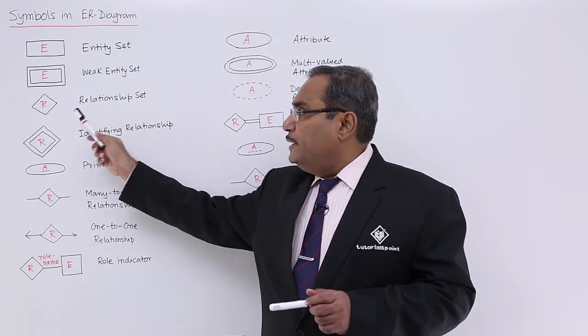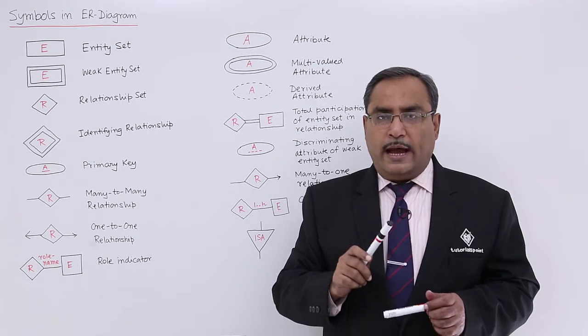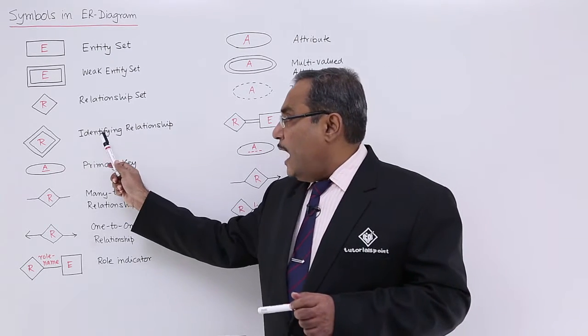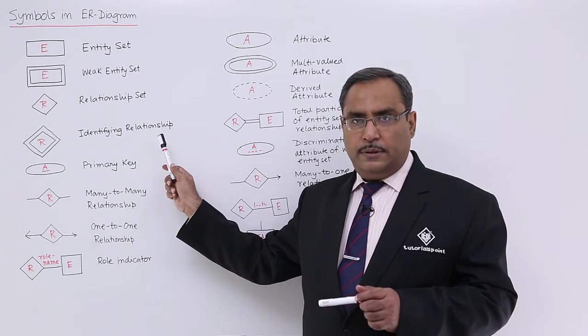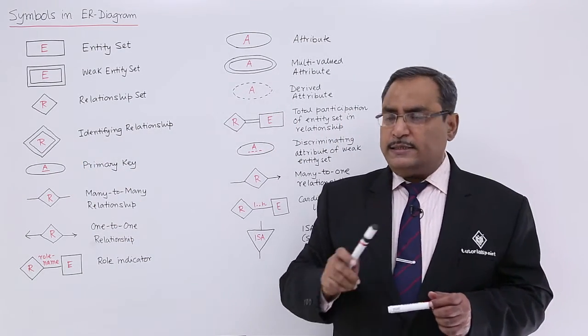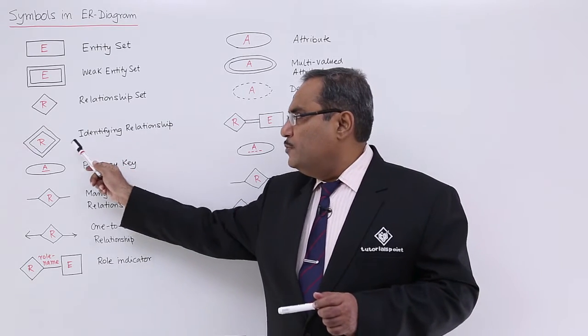Relationship set will be denoted by a diamond and the relationship set name will be written inside. Identifying relationship will be denoted by a double diamond and the identifying relationship name will be written inside.